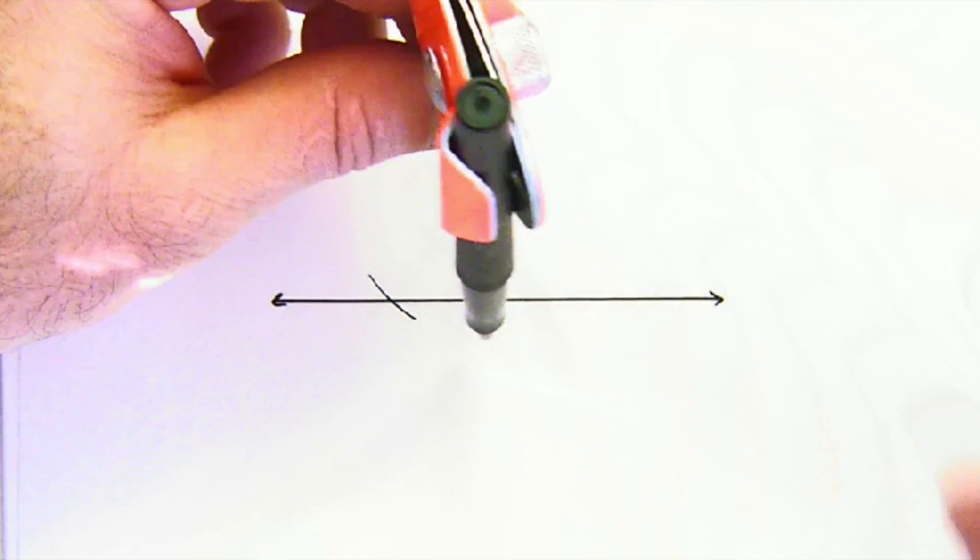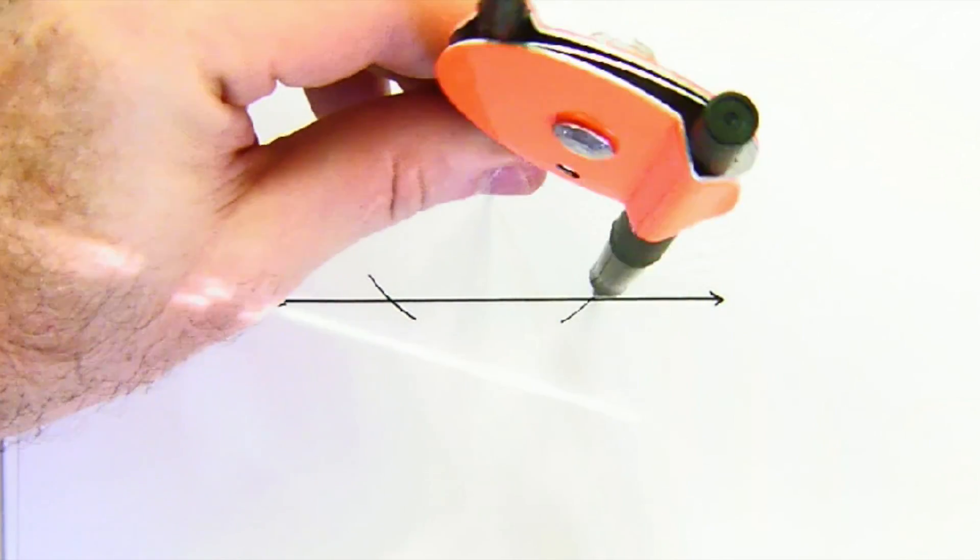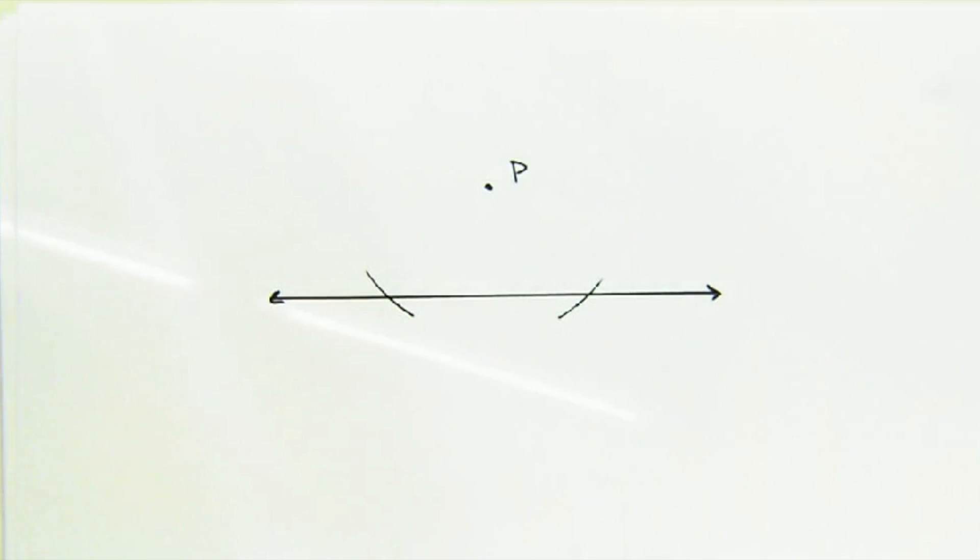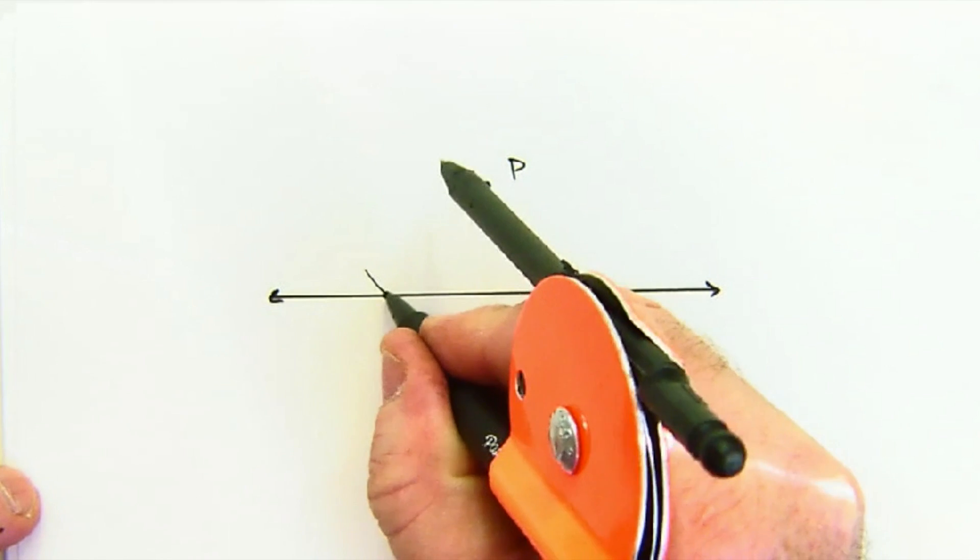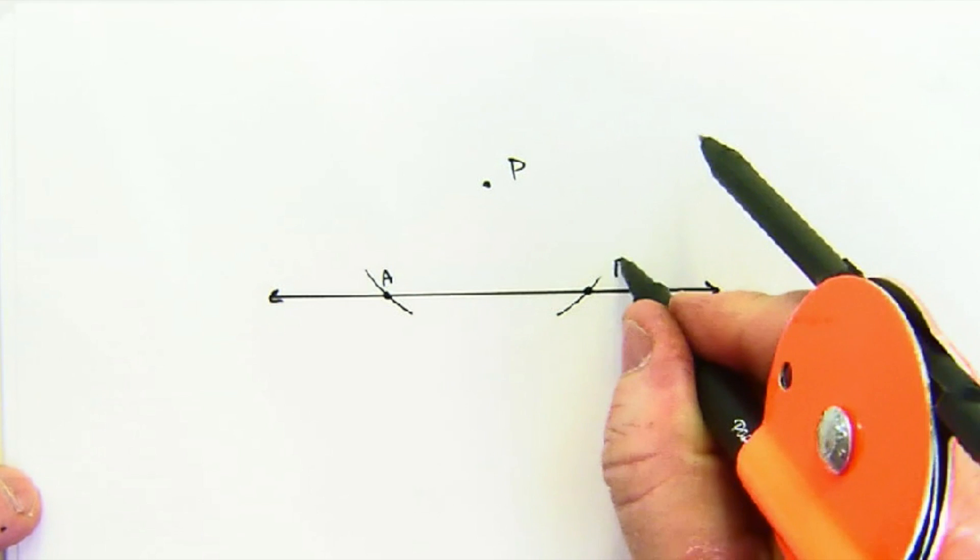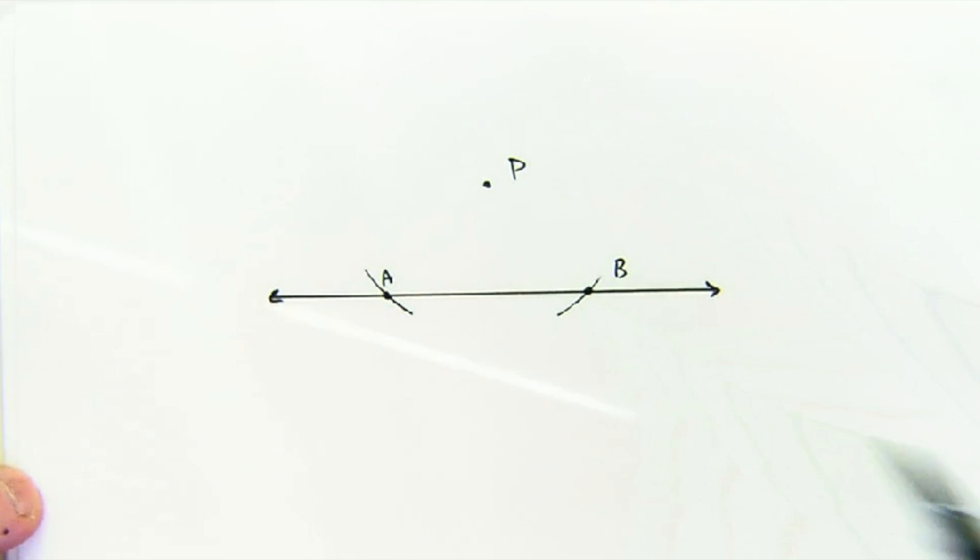From point P I'm going to stretch my compass so that it intersects twice. This creates two points of intersection on the line that are the same distance away from P.